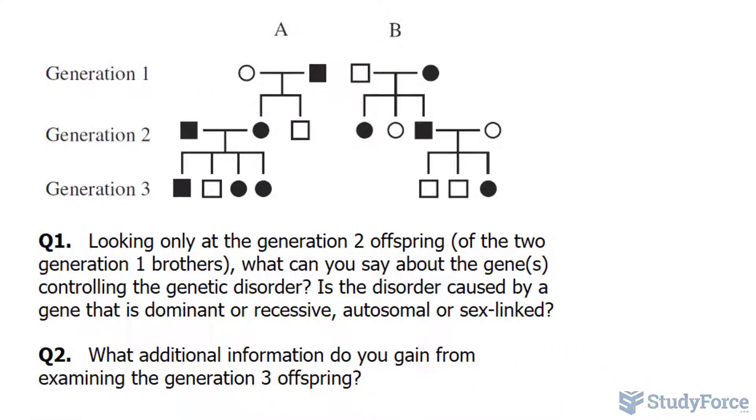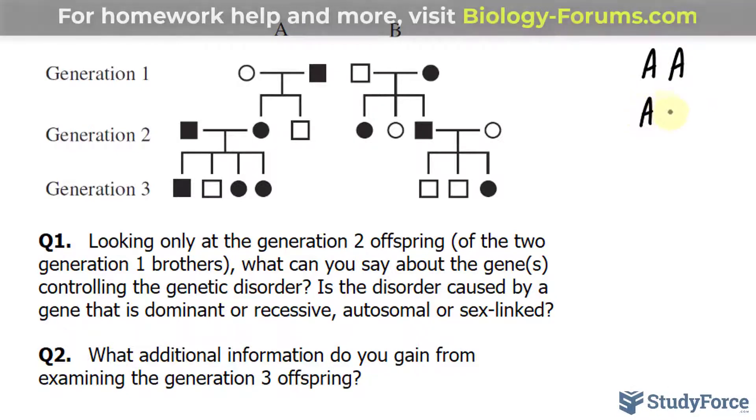Whenever you analyze pedigrees, start with an initial assumption as a starting point. You might find the assumption needs to be changed or tweaked, but at least you're starting somewhere. I'm going to assume this disorder is autosomal, and you'll have this genetic disorder if your genotype is capital A capital A or heterozygous capital A little a, meaning it's dominant. You will not have this disorder if you are recessive little a little a.